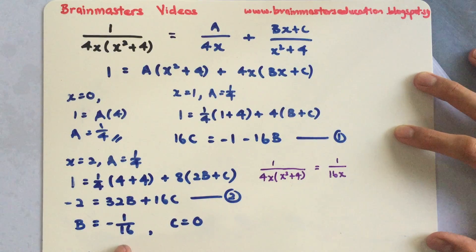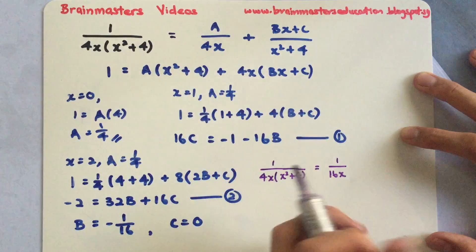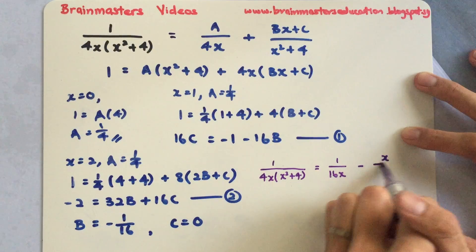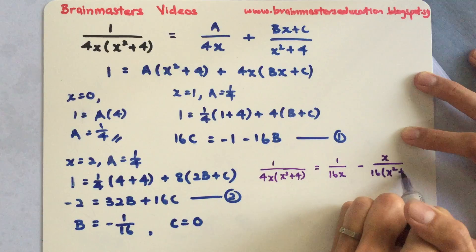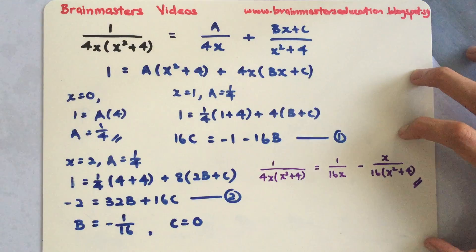And my B is negative 1 over 16 and C is 0. So the 16 can be written in the denominator. I have the negative in front, so x over 16 times x squared plus 4 instead. This will be my answer for the partial fraction.